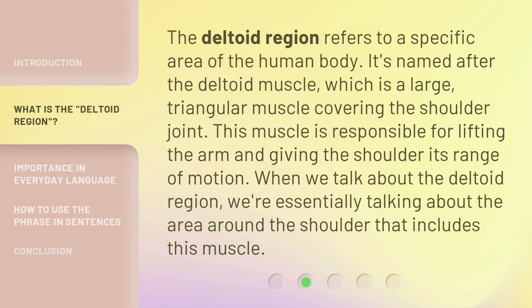The deltoid region refers to a specific area of the human body. It's named after the deltoid muscle, which is a large, triangular muscle covering the shoulder joint. This muscle is responsible for lifting the arm and giving the shoulder its range of motion. When we talk about the deltoid region, we're essentially talking about the area around the shoulder that includes this muscle.